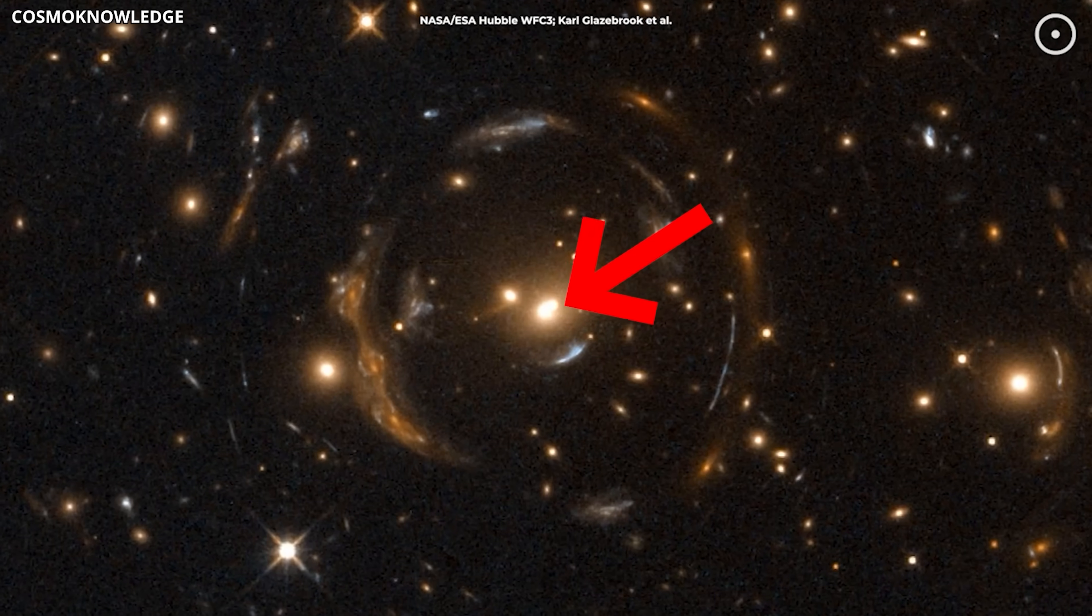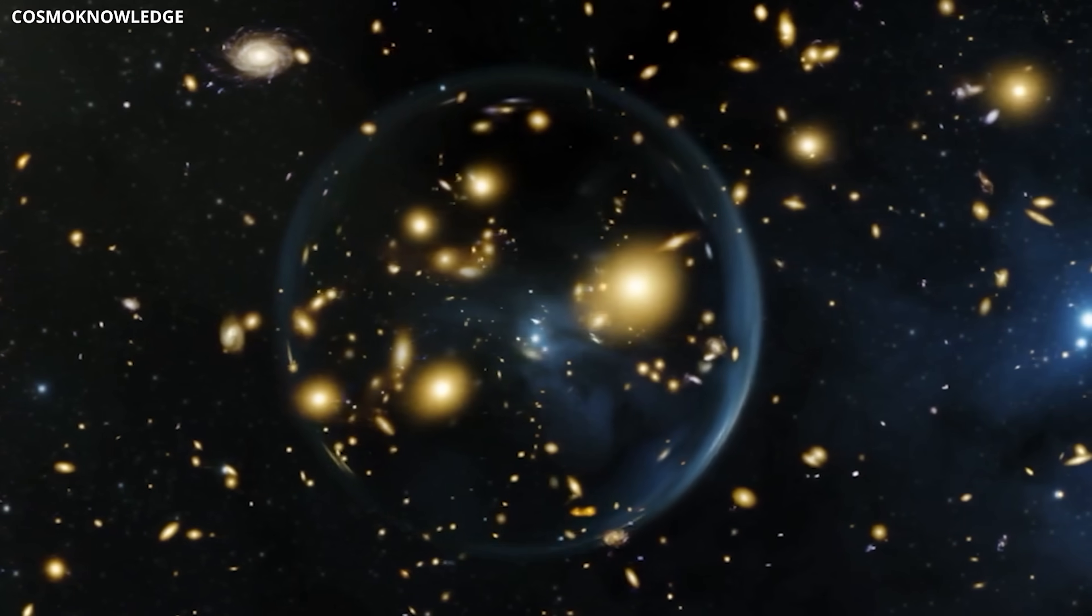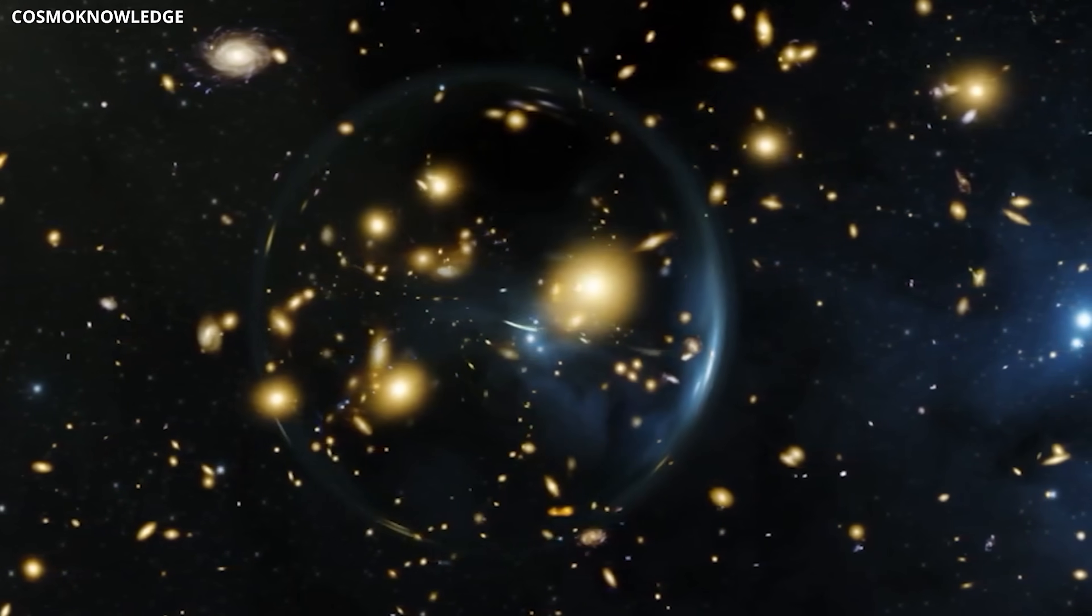As Rutgers astrophysicist Charles Keaton explained, a fifth image at the center can only appear if there's something unusual happening with the mass distribution bending the light.